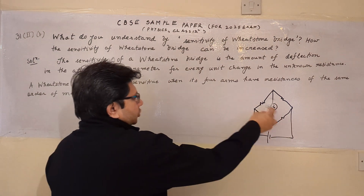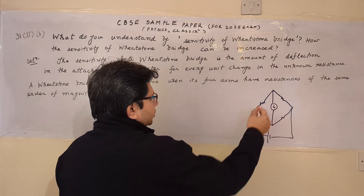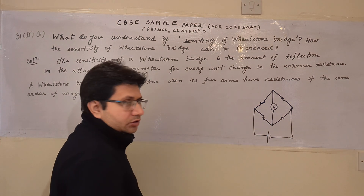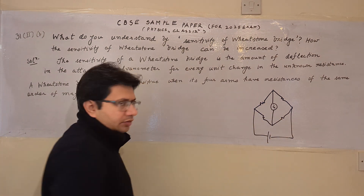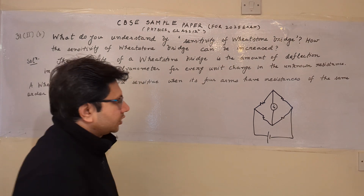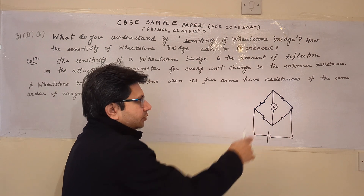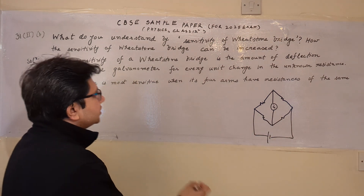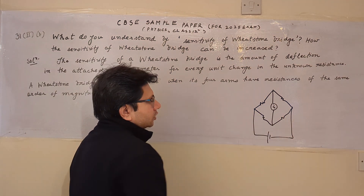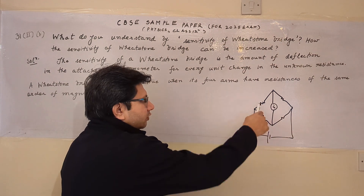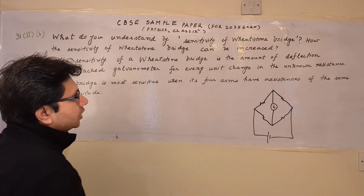If there is a change in any particular resistor's value, the deflection changes near the balance point — not exactly at the balance point, but near it. So when there is a change in the resistance, how much deflection results from that particular change determines the sensitivity. Basically, it is the ratio of the change in galvanometer current with respect to the change in the resistance.